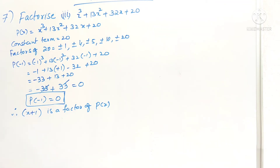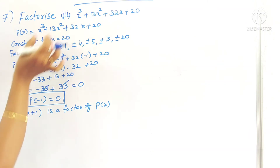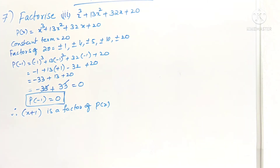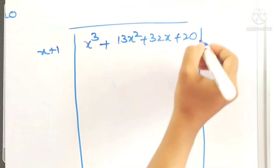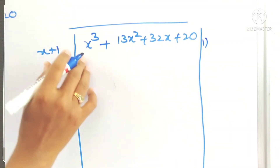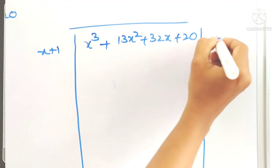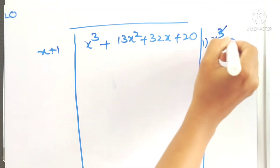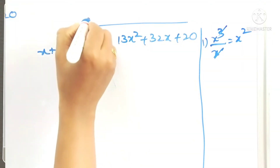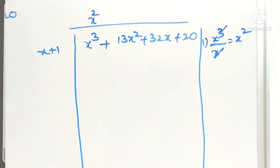To find the remaining two factors, we divide p(x) by x + 1. For the first term in the quotient, take the first term of the dividend, x³, and divide by the first term of the divisor, x. So x³ ÷ x = x², which we write in the quotient.